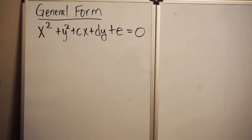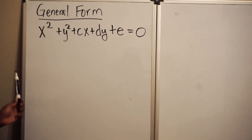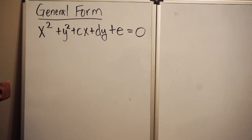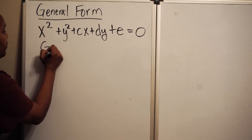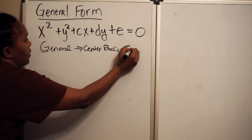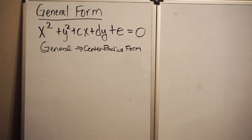Now we're going to look at another form of the equation of a circle called general form. General form is what you get when you take center-radius form, multiply everything out, and combine like terms. General form is x squared plus y squared plus cx plus dy plus e equals 0. We can't easily identify the center or radius from this form, so one of our goals is to take the general form and convert it back to center-radius form by completing the square.